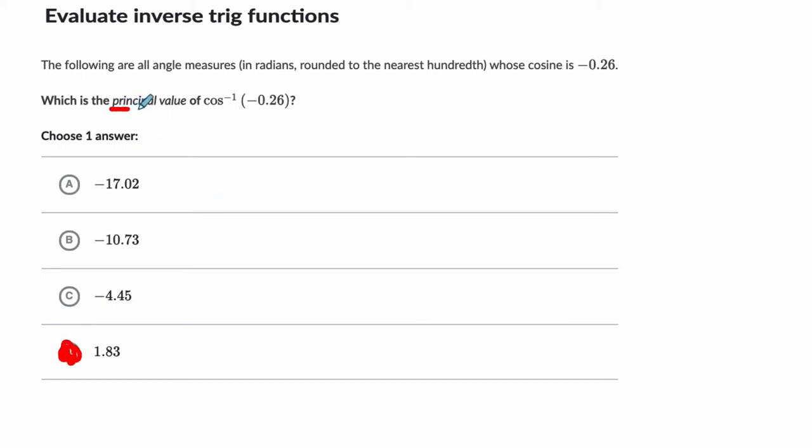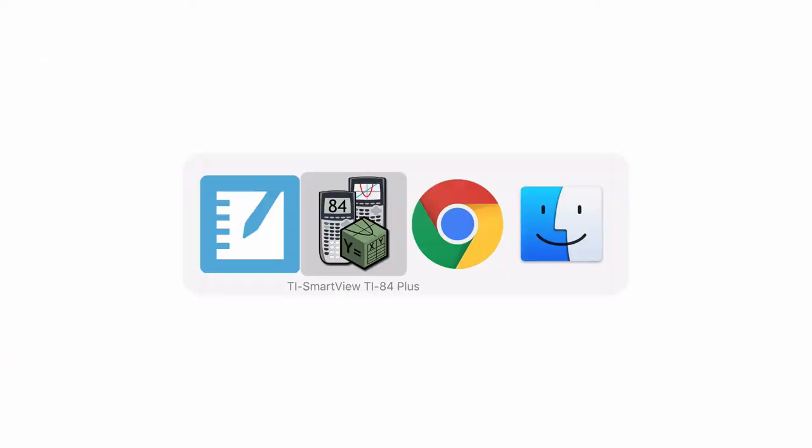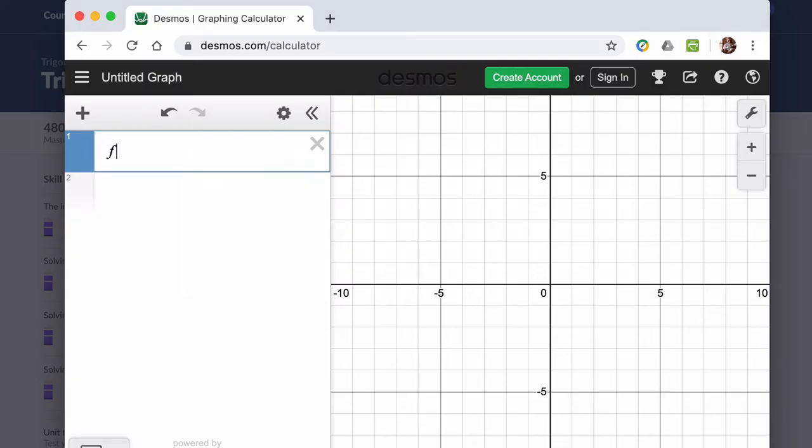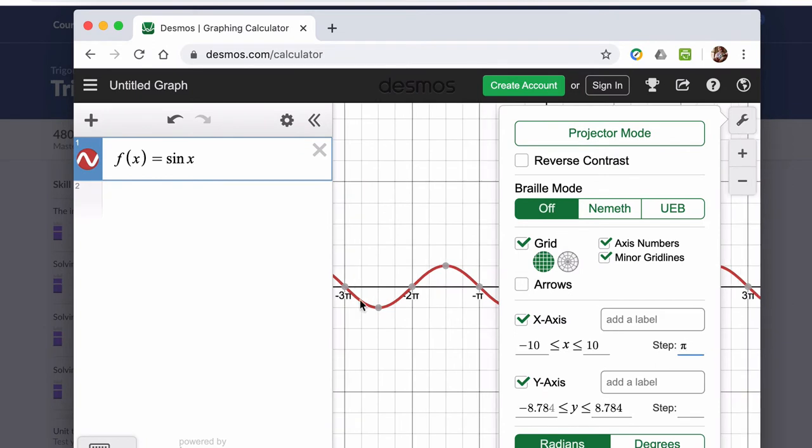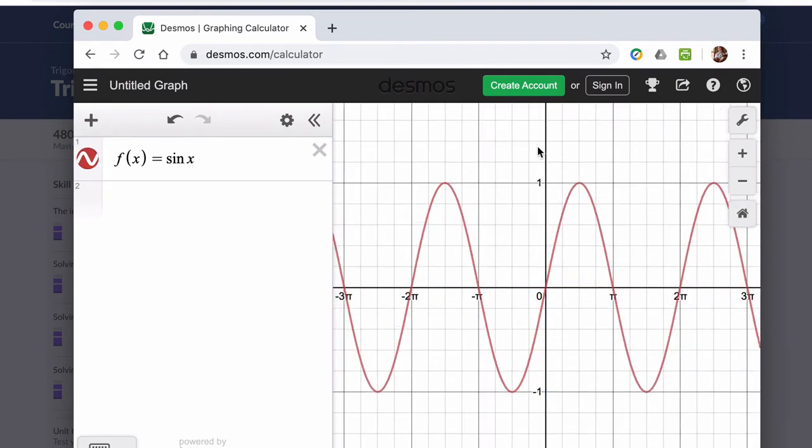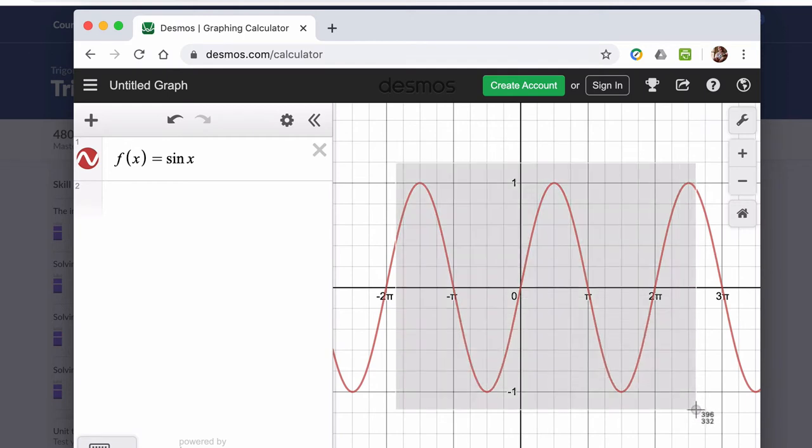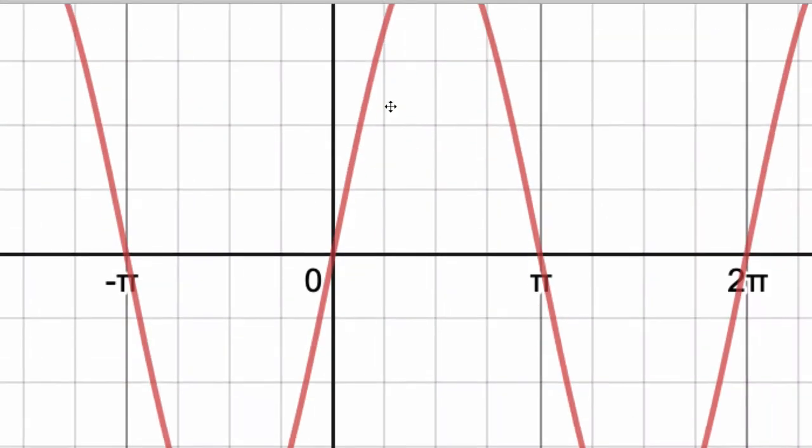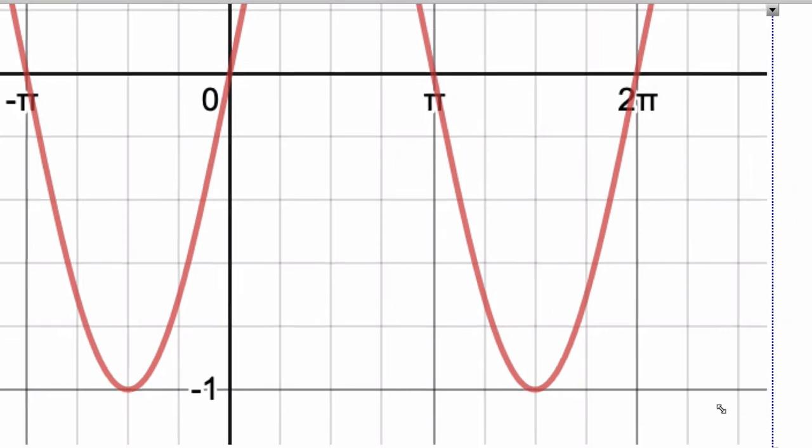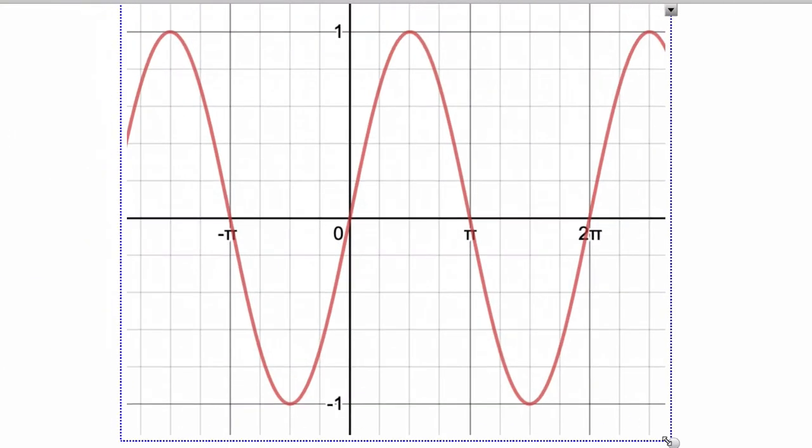But I want to explain a little bit about this idea of a principal value and why there are multiple answers. So what we'll do, we'll actually start with sine, and then we'll talk about cosine. I'm going to make a blank page. And the first thing I want to do is pull up a graph of the sine function. So f of x equals the sine of x. I know the first example is about cosine, but just bear with me. I'm going to press this wrench, put pi for my x-axis, scale this up, and then I want to take a screenshot of this. And now what we should do is talk about what's going on, like why the inverse trig function has something called a principal value and what that's all about.